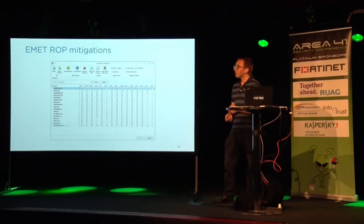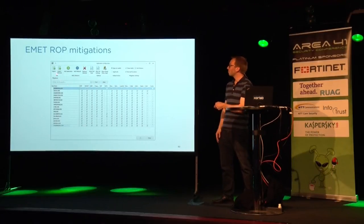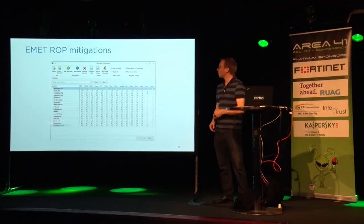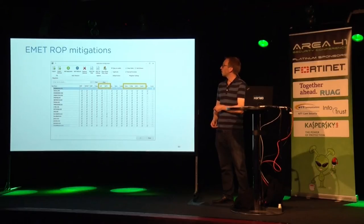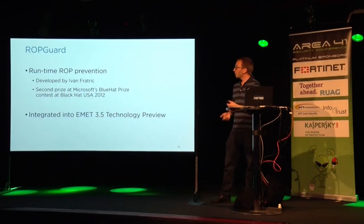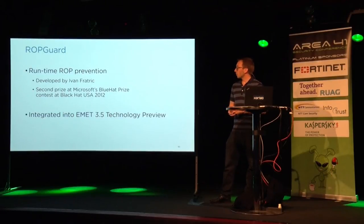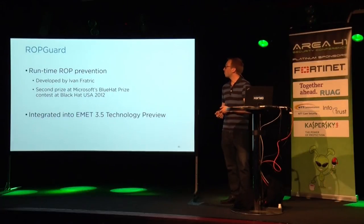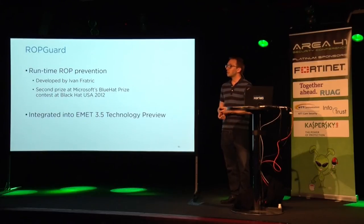This is the EMET config UI. You can configure processes to be guarded and enable specific security checks. ROP mitigations are the features in the highlighted boxes — we will focus on these. The ROP mitigations were introduced through ROP Guard, which won a Microsoft BlueHat Prize. ROP Guard was first integrated into EMET 3.5.